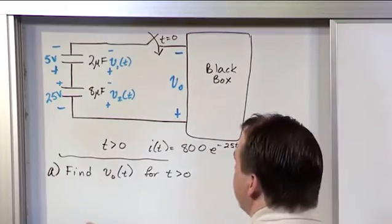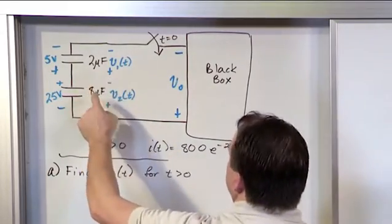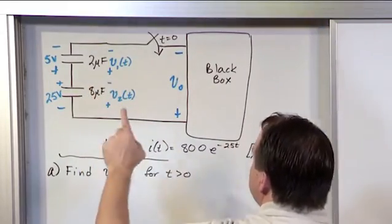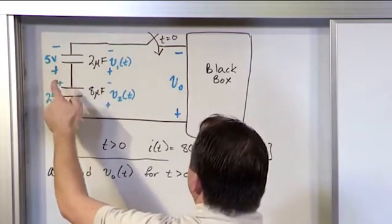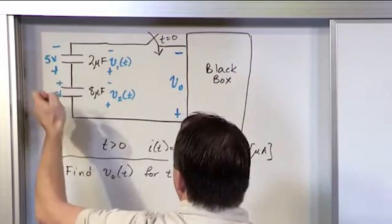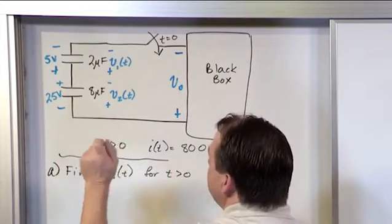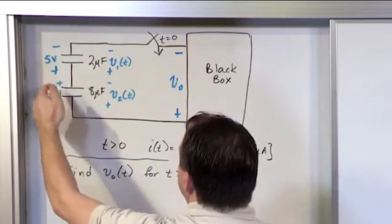We have two capacitors. One is 2 microfarads, the other is 8 microfarads. These capacitors have initial conditions at time zero. This one is charged up to 5 volts in this orientation, minus to plus. This one is charged up to 25 volts in this orientation, plus to minus.